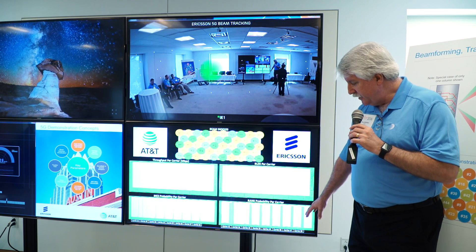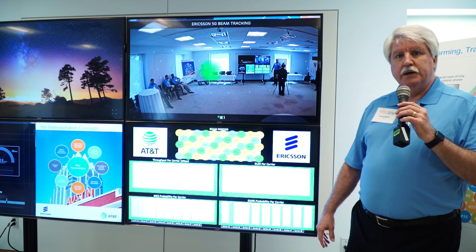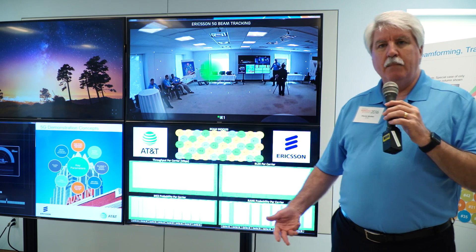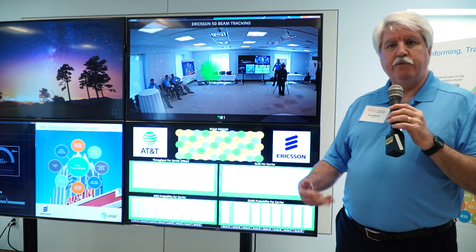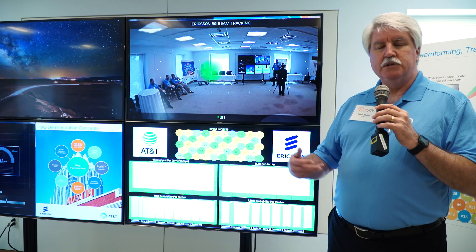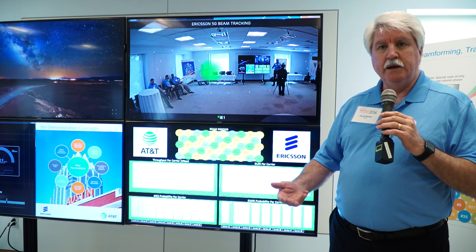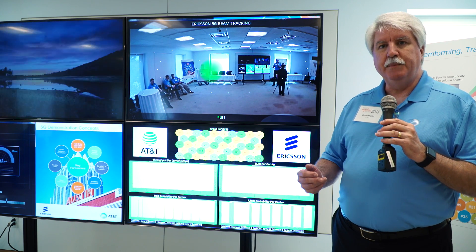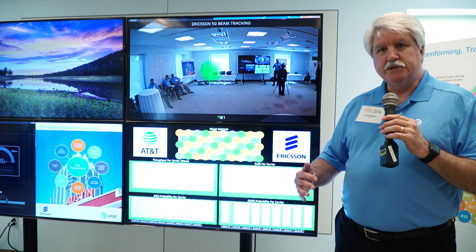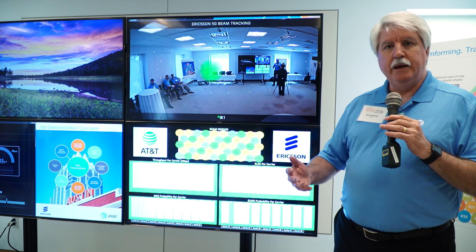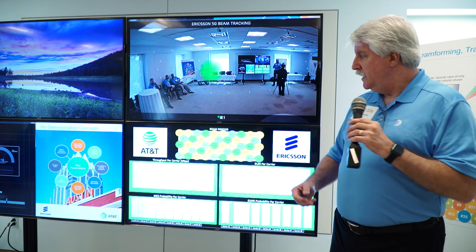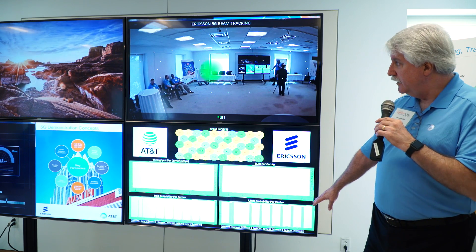In the lower right is the probability of what rank is being used, and that has to do with MIMO. There are four independent streams. As long as the radio carrier is of the right quality it can use each one of these streams independently. If the quality starts to degrade it may reduce the number of streams that it uses.